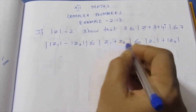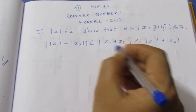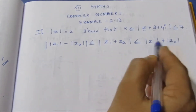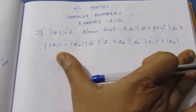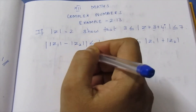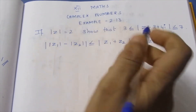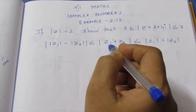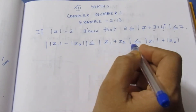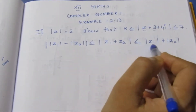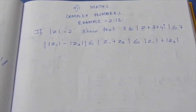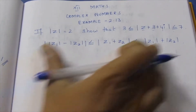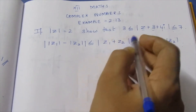If we have a small number, it is less than or equal to C. That means we need to put the formula to make it easier. So modulus of Z1 minus modulus of Z2 is less than or equal to modulus of Z1 plus Z2, which is less than or equal to modulus Z1 plus modulus Z2. We will be using Z1 and Z2 in this format.